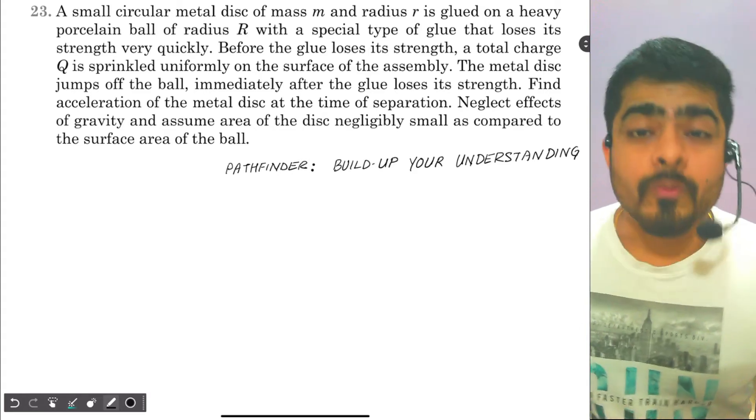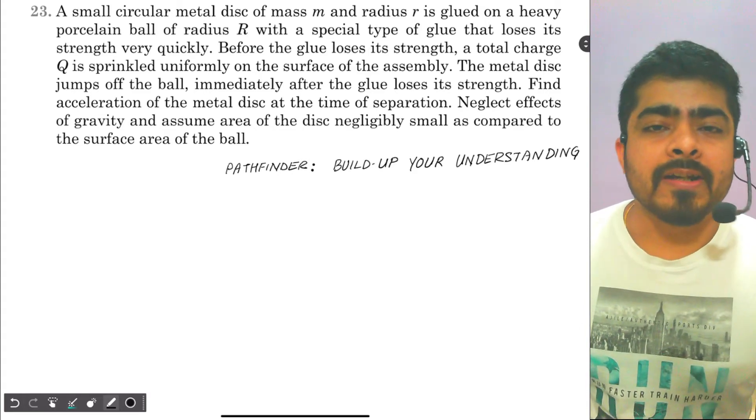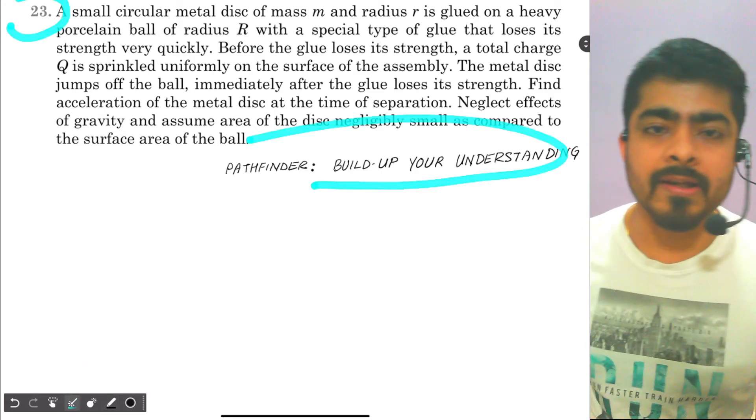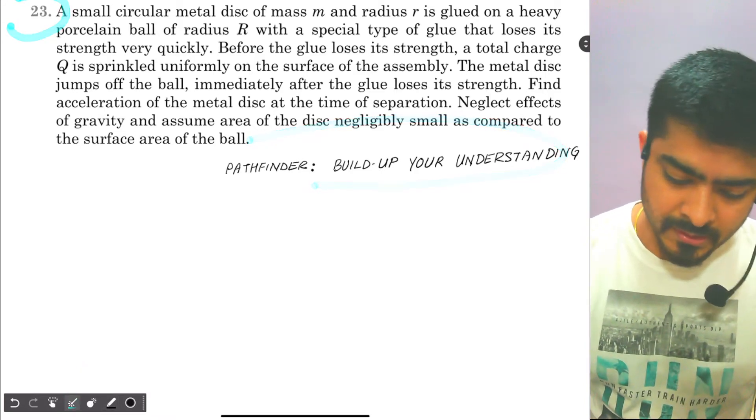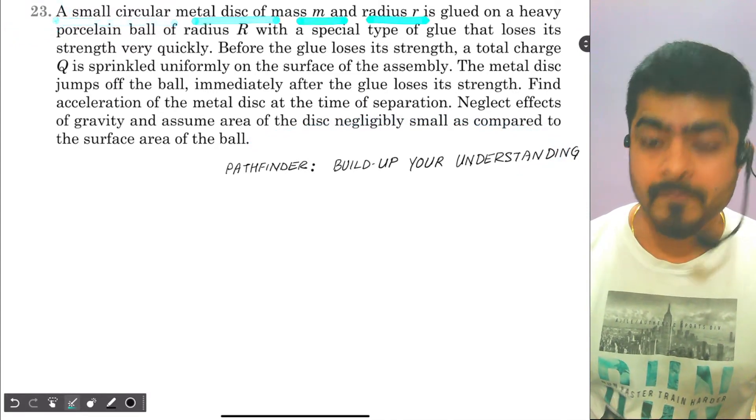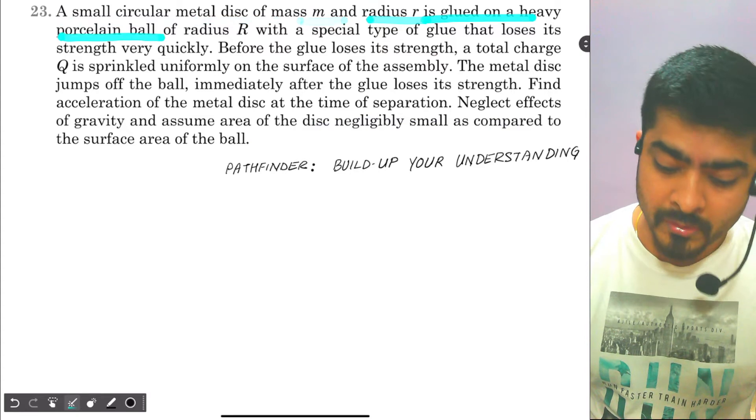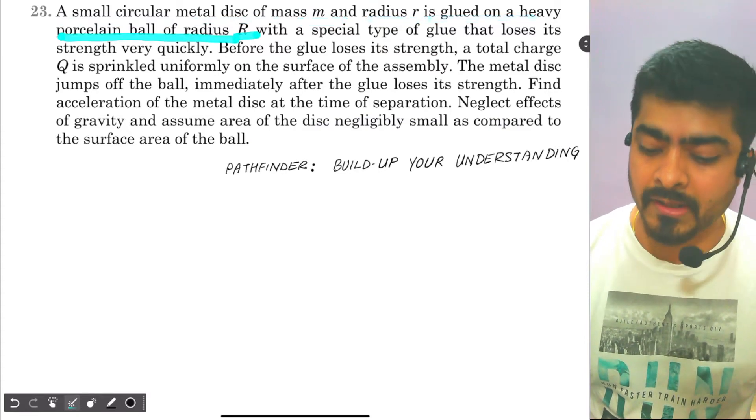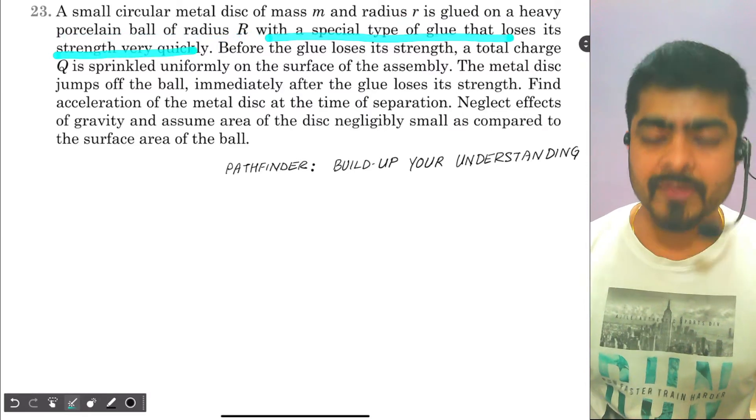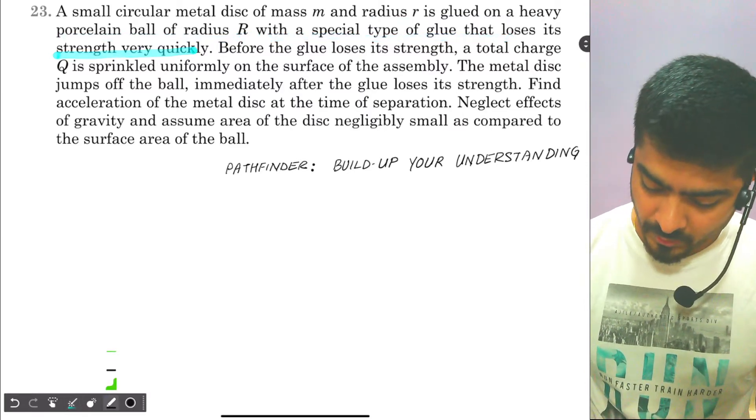Hello guys, so here we have a question from Pathfinder Electrostatics chapter. This is question number 23. The question says: A small circular metal disc of mass M and radius R is glued on a heavy porcelain ball of radius R with a special type of glue that loses its strength very quickly.